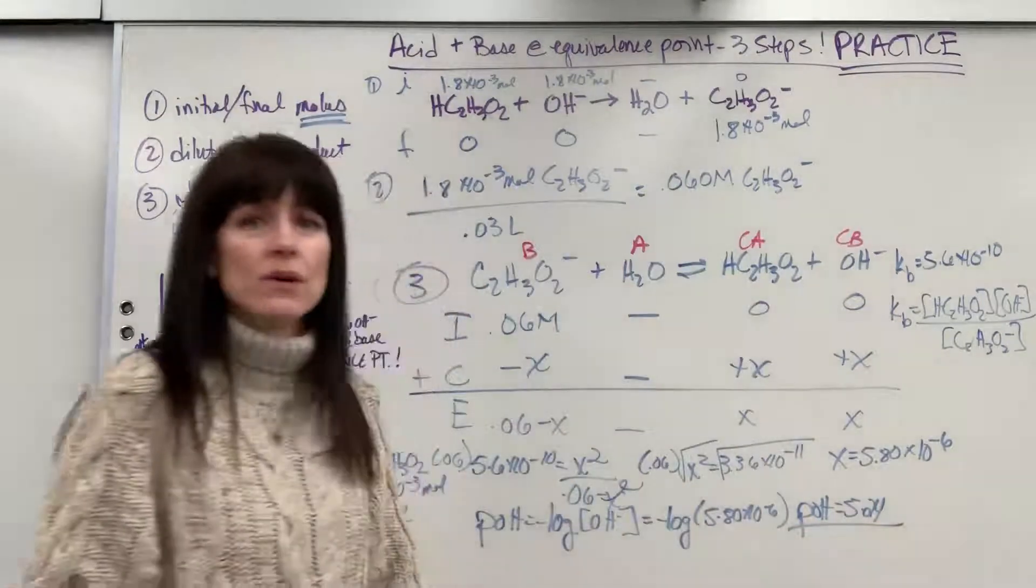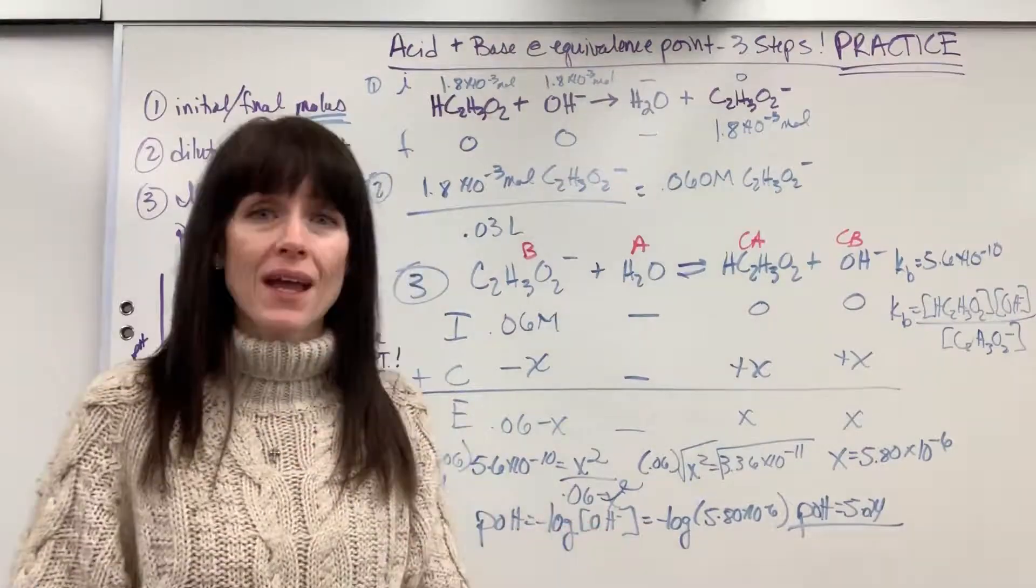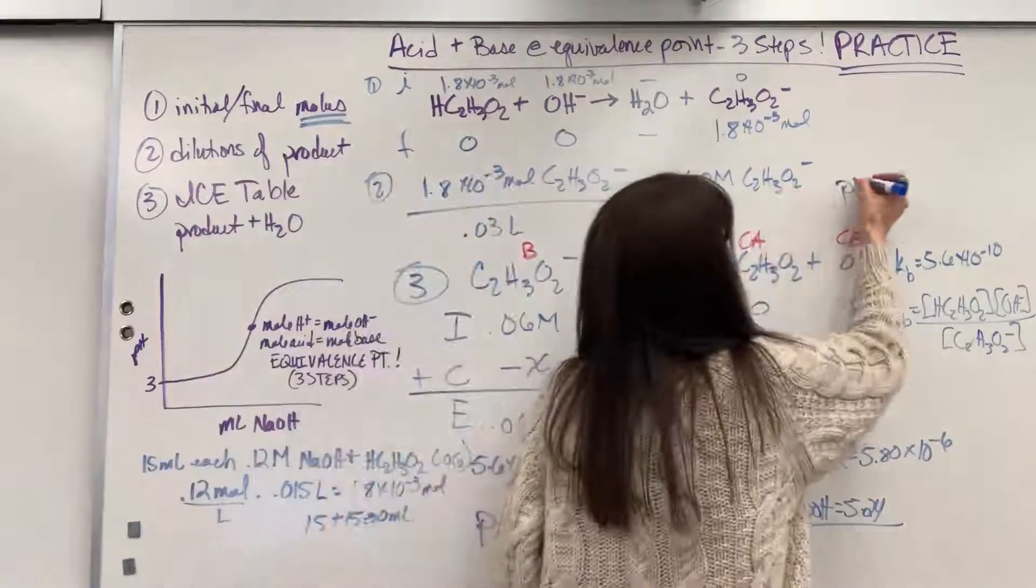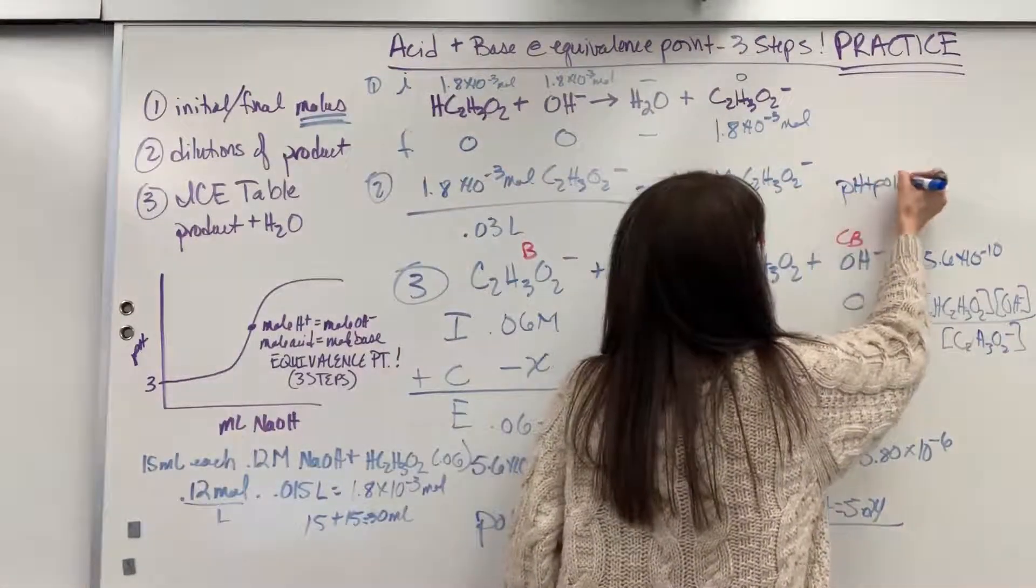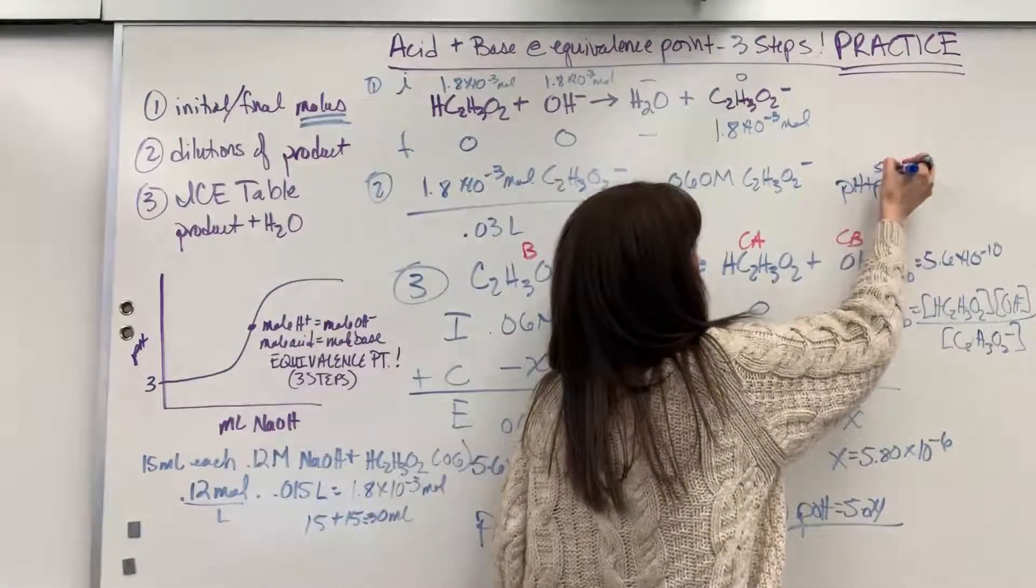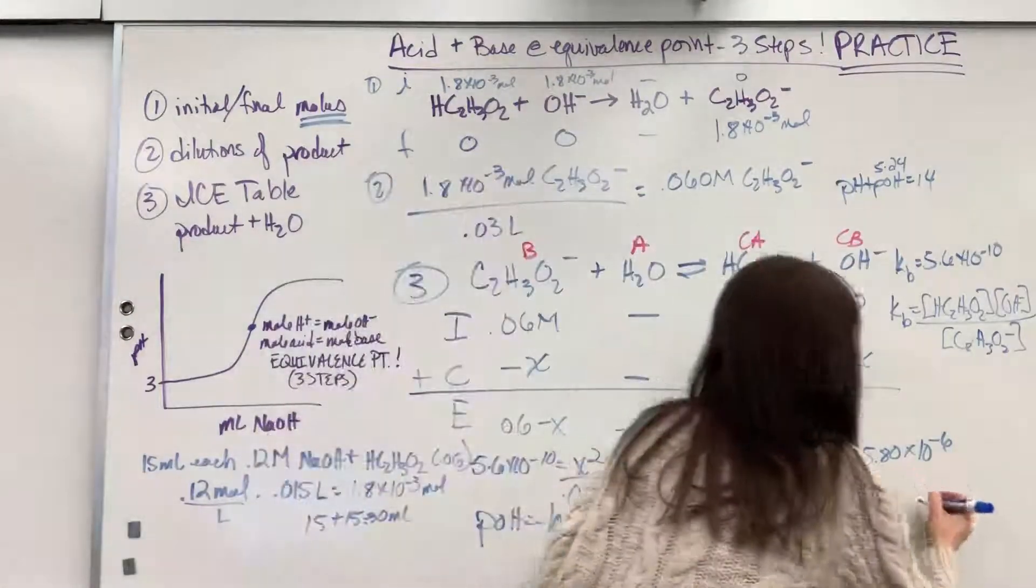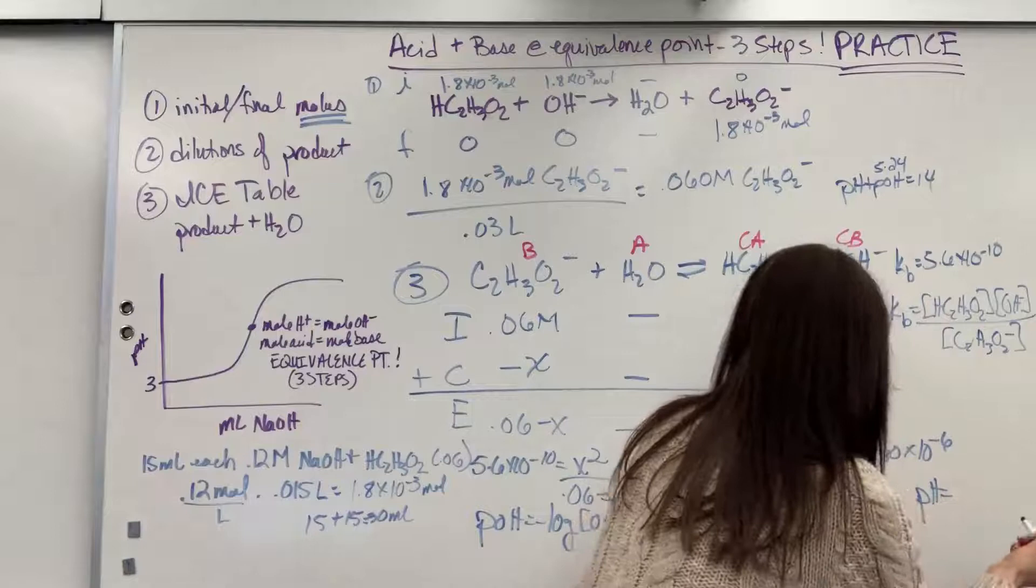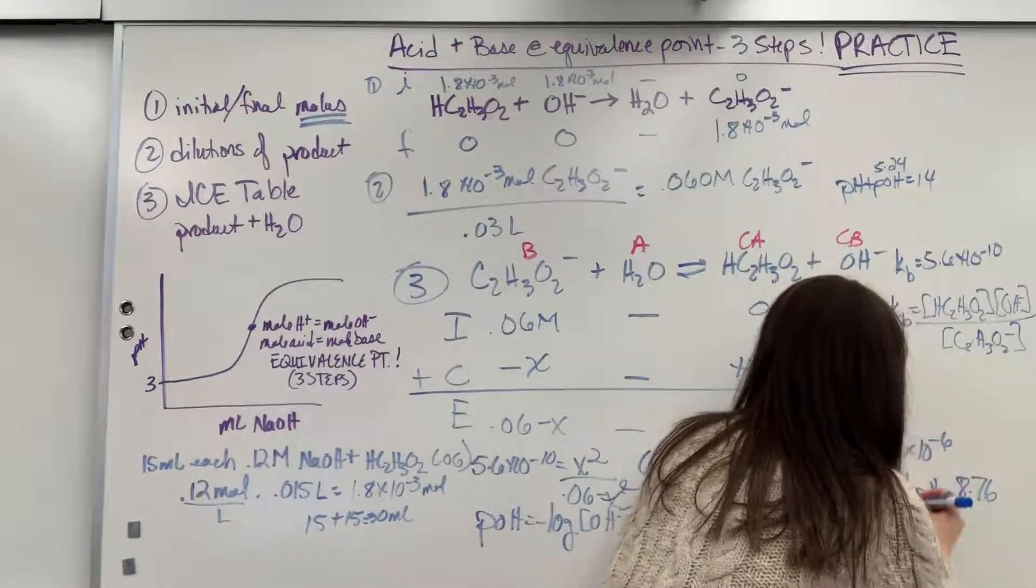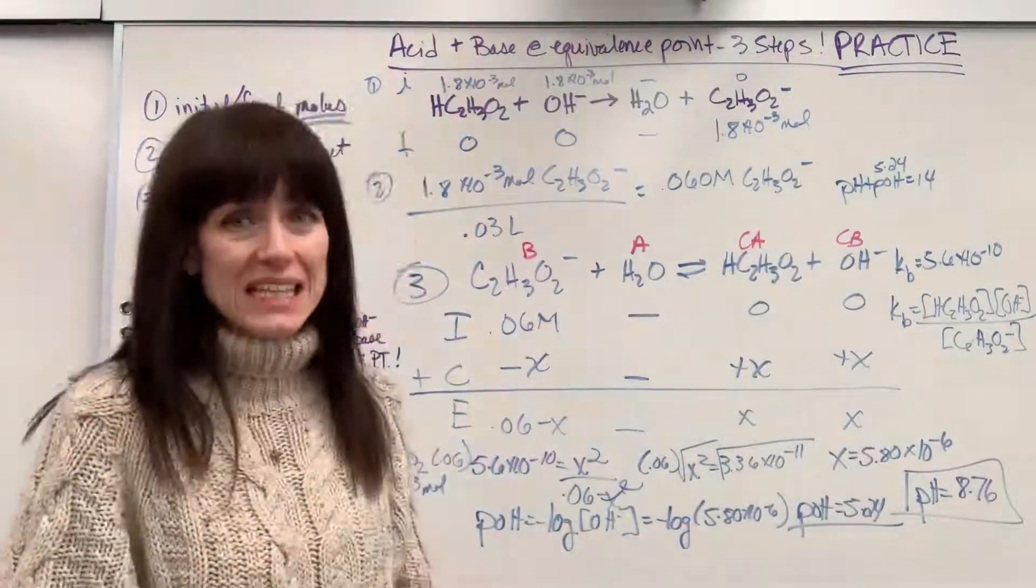Now, be so careful. We found pOH because we took the negative log of hydroxide, but we want pH. So there's one more tiny step on this. Remember, pH plus pOH equals 14. So I'm going to plug in that pOH, 5.24, subtract it from 14. Finally, here's our answer. pH will equal 8.76. It's going to be slightly basic.